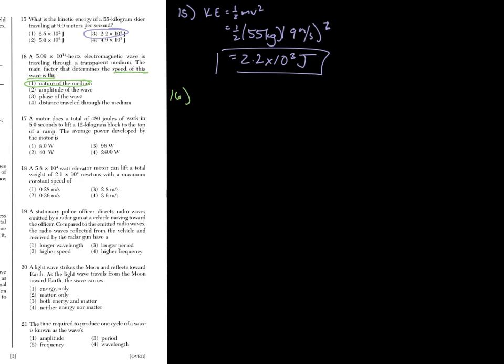Number 17. A motor does that total of 480 joules in 5 seconds. Average power developed by the motor is. So power is equal to work over time. We have 480 joules of work over 5 seconds. And we should get 480 divided by 5. That's about 96 watts.